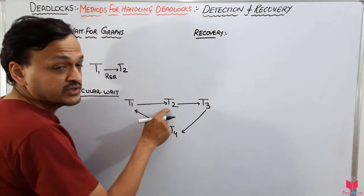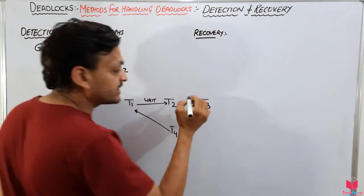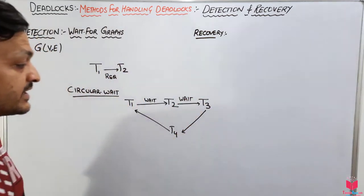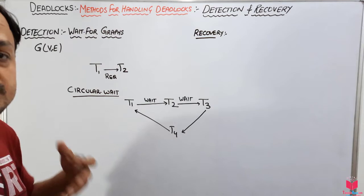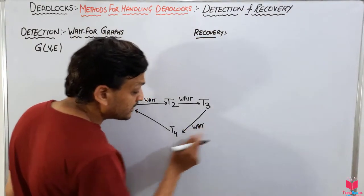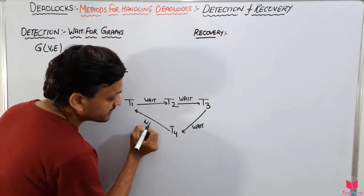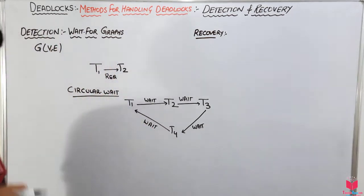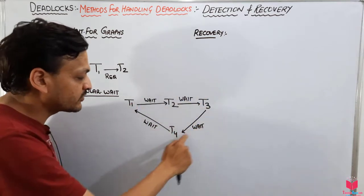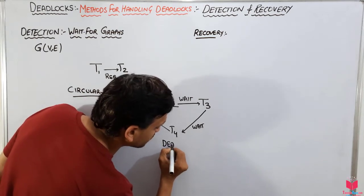And T4 is requesting T1 to release its resources. So T1 is waiting for T2, T2 is waiting for T3, T3 is waiting for T4, and T4 is waiting for T1. Starting from T1, we can trace a cycle: T1 → T2 → T3 → T4 → T1. This means the system is in a deadlock state because there is a circular wait.